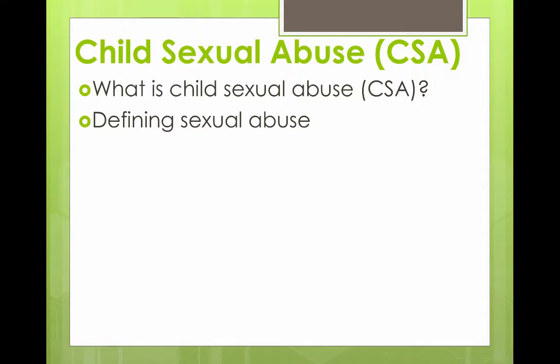One measure of determining whether an action was interpreted sexually by the perpetrator is a way to determine whether CSA took place. The third component is the exertion of power or control over the child victim — looking at whether an adult is using their authority to achieve sexual ends. Implicit in this is the idea that children can never give consent for sexual actions, because they are below the legal age of consent and cannot actually consent to sexual activity.